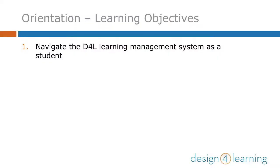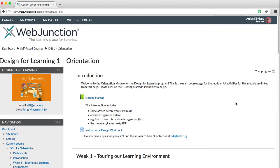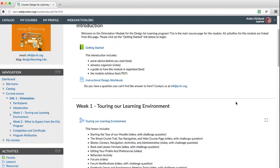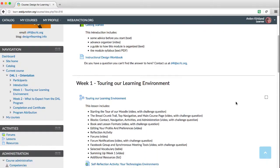So what can you expect from this orientation? Here are the learning objectives for this module. Number one: navigate the D4L Learning Management System as a student. You'll get to look around here in our Moodle, which is the Learning Management System or LMS, here in WebJunction.